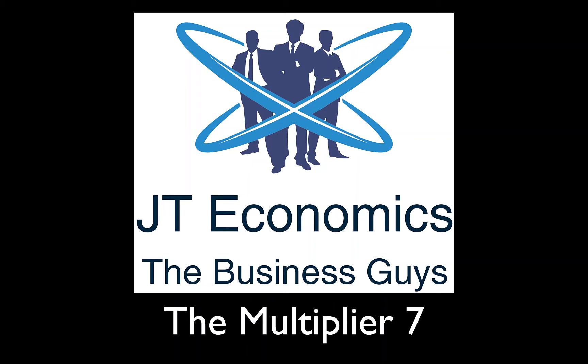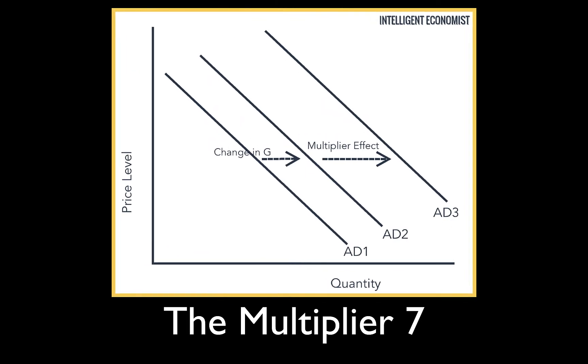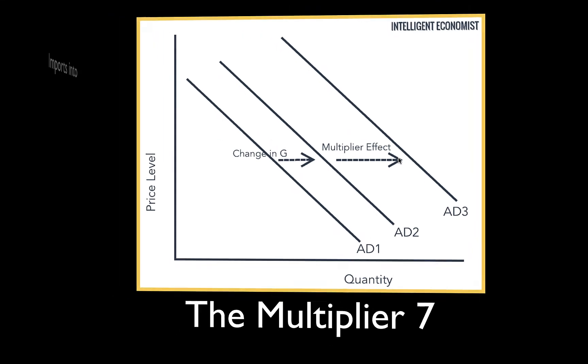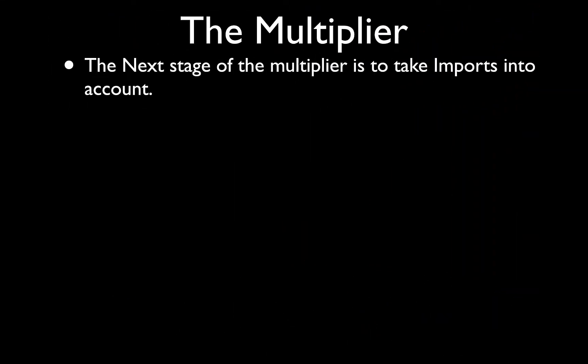Okay guys, and welcome to the seventh video in the mini-series of the multiplier. What we're trying to do is explain the effect of an initial increase in aggregate demand, an initial injection into the economy, and the resultant increase in national income which is greater than the initial injection as a result of the multiplier effect. Essentially, the aggregate demand shifts out by the size of the injection and the multiplier effect causes the aggregate demand to shift out even further. Got that photo from the intelligent economist.